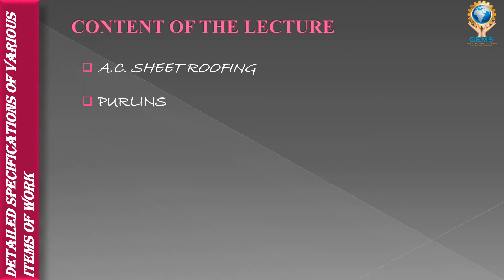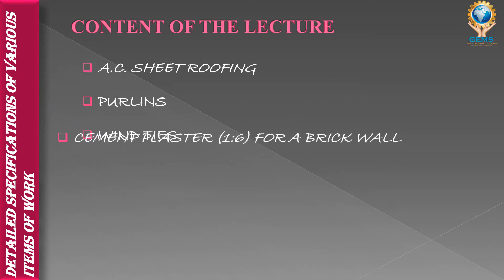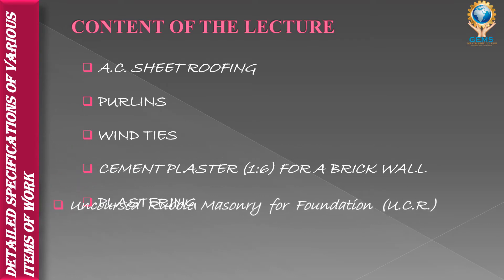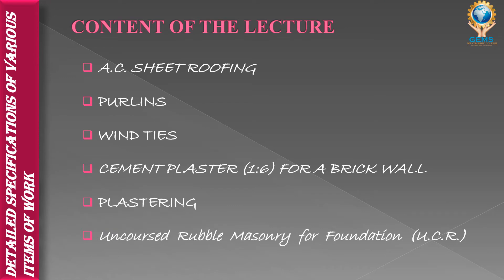The contents of this lecture are: first, AC sheet roofing; second, purlin; third, wind ties; fourth, cement plaster for a brick wall; fifth, plastering; and lastly, uncoat rubble masonry for foundation. In this lecture, we are going to learn the detailed specifications of AC sheet roofing, cement plaster for a brick wall, and uncoat rubble masonry for foundation.